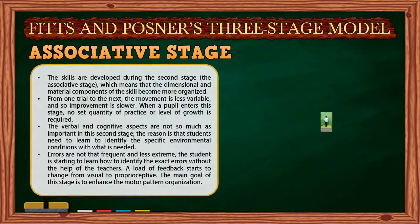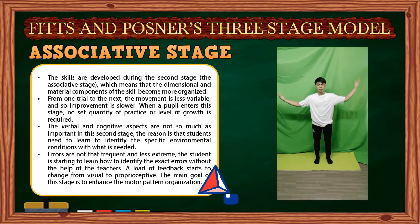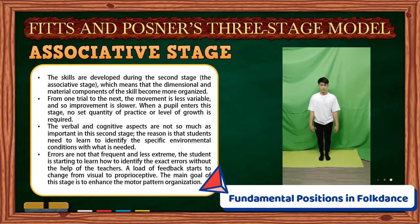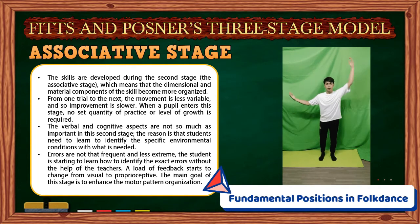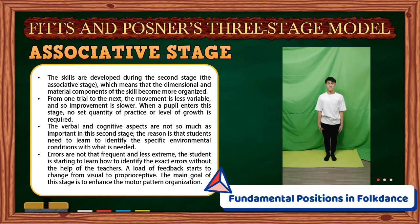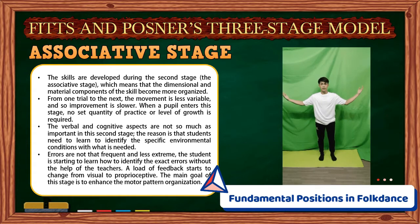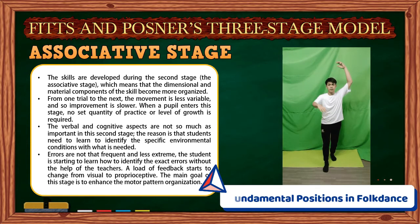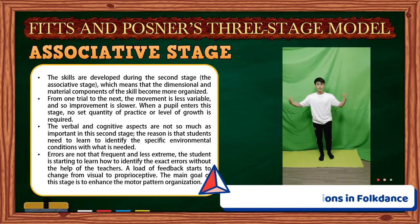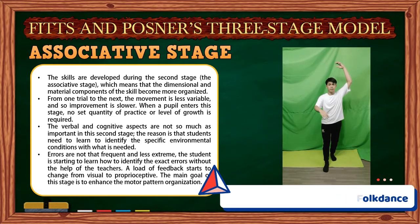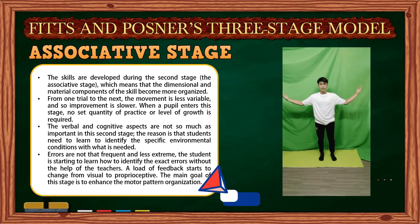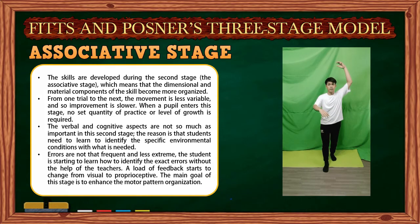Skills are developed during the second stage, the associative stage, in which the dimensional and material components of the skill become more organized. From one trial to the next, movement is less variable, and improvement is slower. No set quantity of practice or level of growth is required to enter this stage. The verbal and cognitive aspects are less important here, as students need to learn to identify specific environmental conditions. Errors are less frequent and less extreme, and students begin identifying errors without the teacher's help. Feedback shifts from visual to proprioceptive, and the main goal is to enhance motor pattern organization.